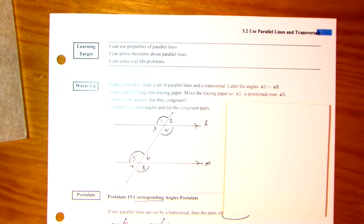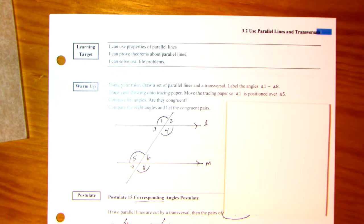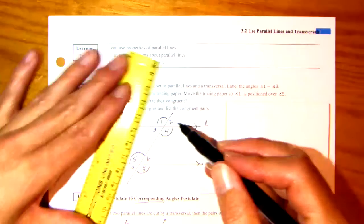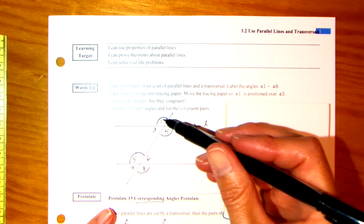Now you'll see some markings on here because I've already done this video, and I realized I forgot to turn it on. So, use your ruler. I took a ruler, and I drew a set of parallel lines. So I drew a line above and below the ruler. And then I drew a transversal. I purposely didn't make the transversal perpendicular.